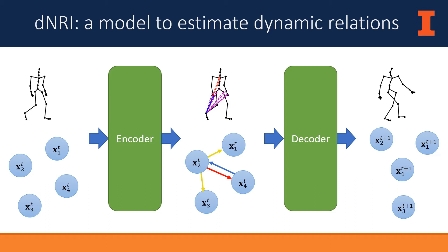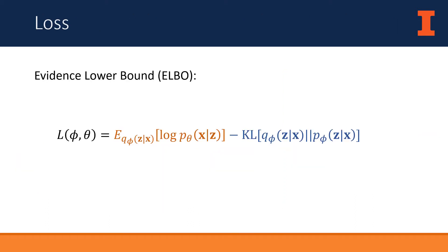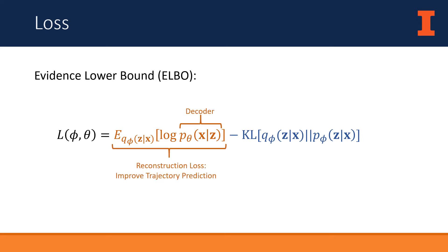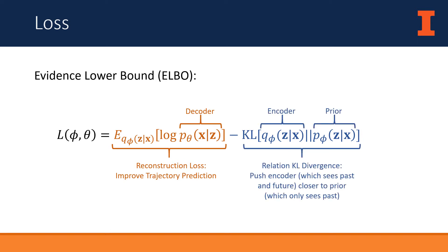So that we can use the model during inference to predict the future of a sequence, we additionally train a sequential prior distribution over relation types, which is solely a function of the past. We train DNRI using the evidence lower bound. The first term is a reconstruction loss, used to train the decoder to make correct predictions for future time steps. The second term is a KL divergence between the encoder and the prior, which pushes the encoder—seeing both past and future—to match the prior, which only sees the past.